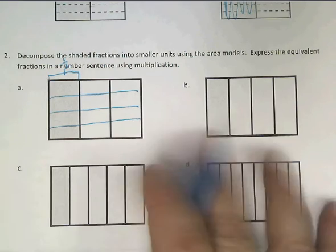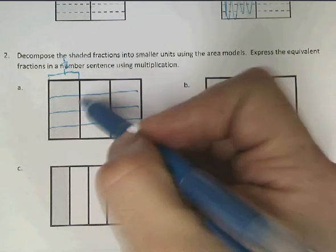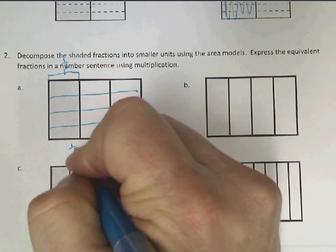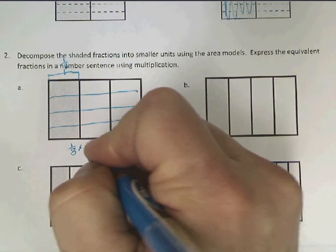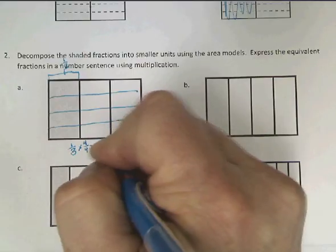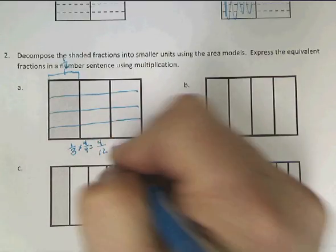Down here at the bottom, in this scenario, we started out with one third. We now have four times as many groups, so we're going to have four twelfths.